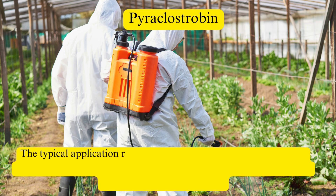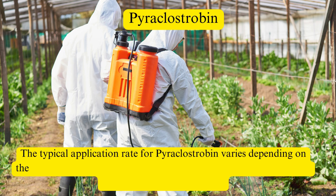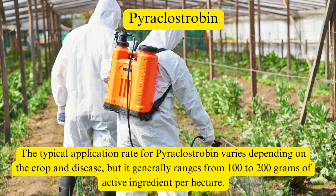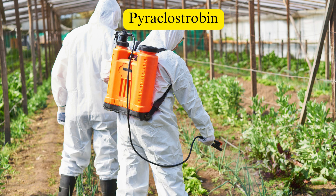Normal dose. The typical application rate for pyroclostrobin varies depending on the crop and disease, but it generally ranges from 100 to 200 grams of active ingredient per hectare. Thank you for watching our video on pesticide info.